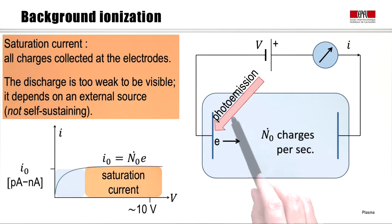Let's say that the photoemission creates N0 dot charges per second, and when all of these charges are collected at the anode, then we have a saturation current. That is, the saturation current is equal to the rate of production of all electrons times the electronic charge. This current is generally very small, of the order of picoamps, and this situation occurs for voltages up to, say, 10 volts.